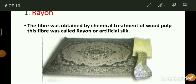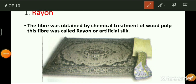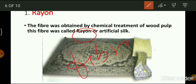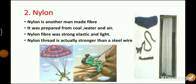Rayon is an artificial silk obtained from natural fibers, so it is also called a man-made fiber. Rayon is obtained when wood pulp is mixed with chemicals. It is cheaper than silk and can be dyed in a wide variety of colors like red, blue, white, etc. Rayon is also mixed with cotton to make bedsheets, or mixed with wool to make carpets.